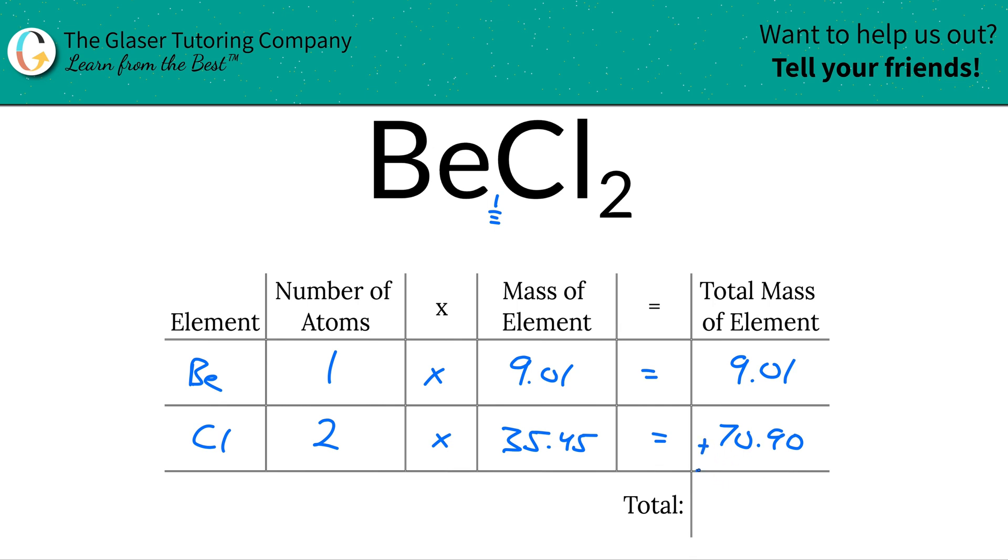To find the total mass of the entire compound, just simply add that column together. And when you do that, it works out to be 79.91. Since we're solving for molar mass, the units here are in grams per mole, and that's as simple as that.